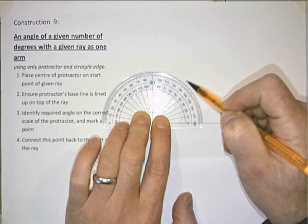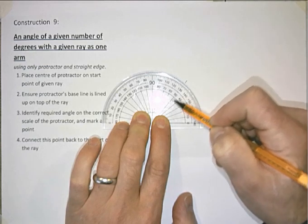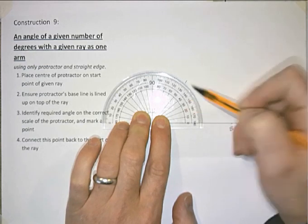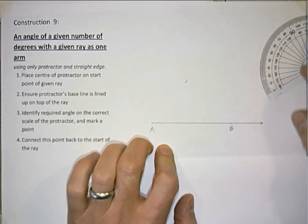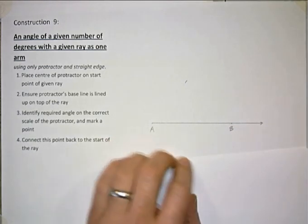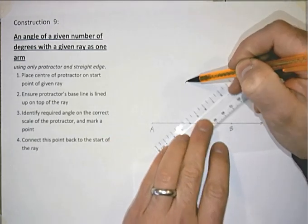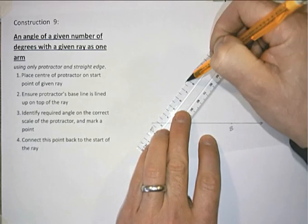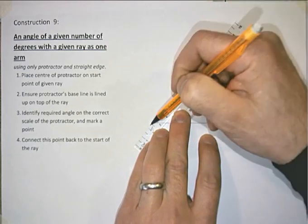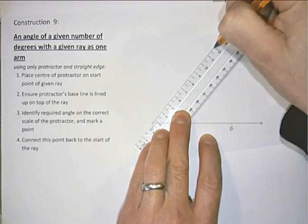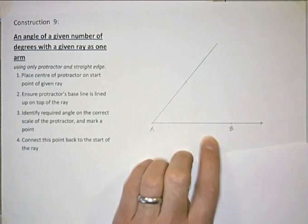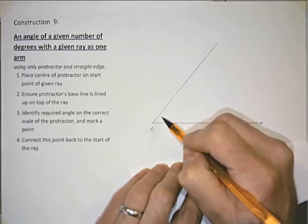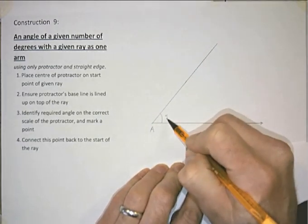Even though this is 130 we're reading up the inside scale. Now I am able to connect up this line mark with my point A to create a second ray that has now created an angle of 50 degrees.